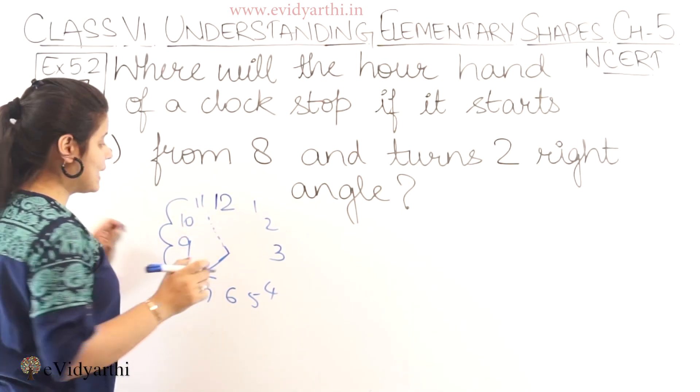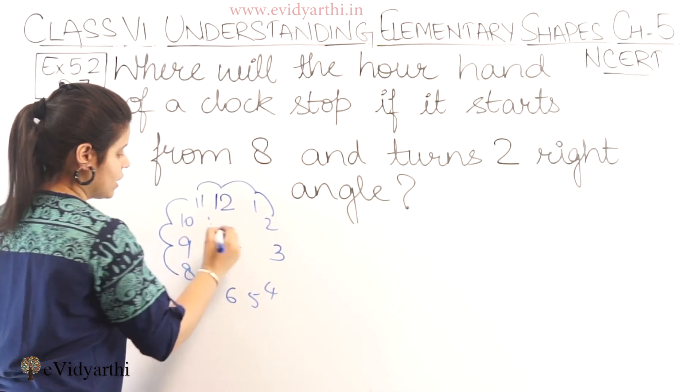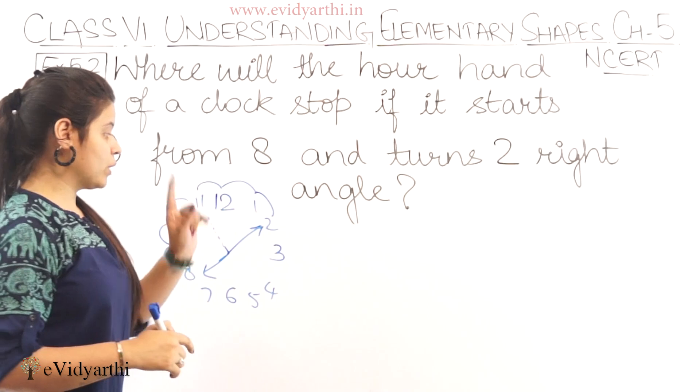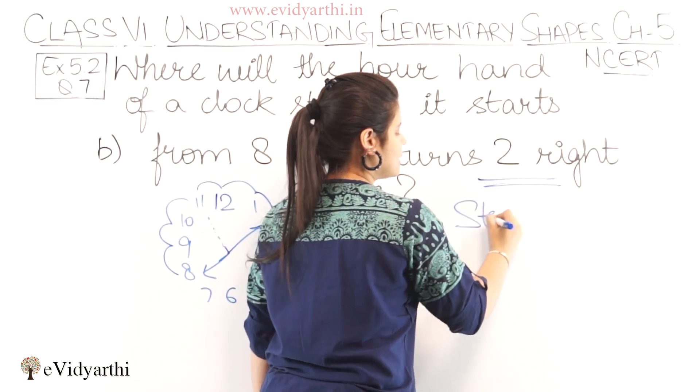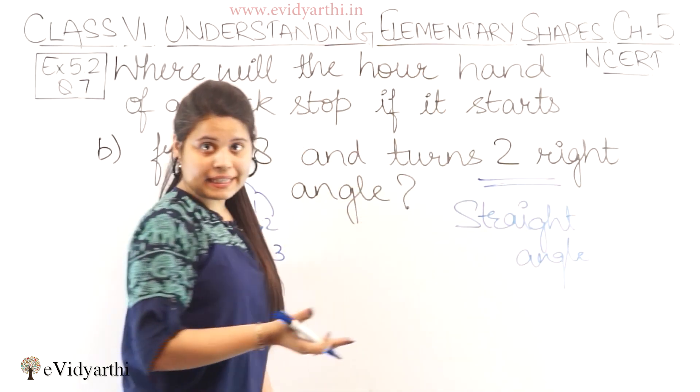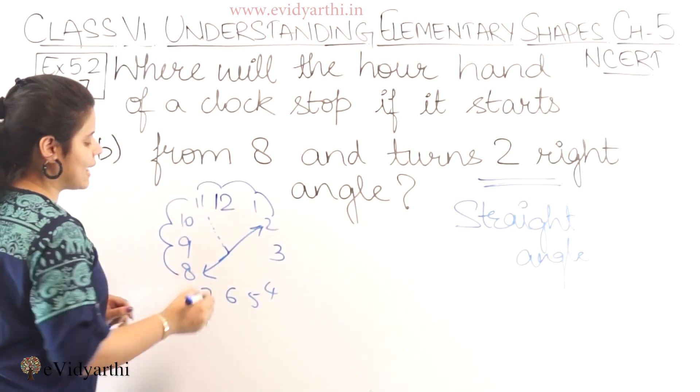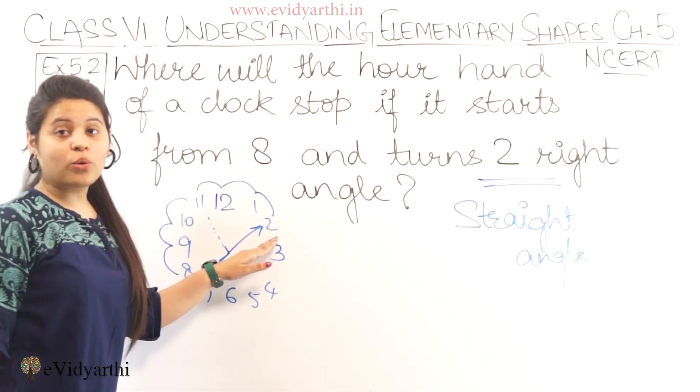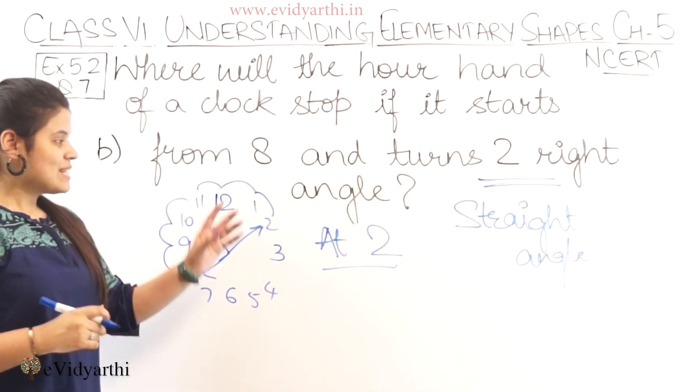So 11 is one right angle then 11 to 12, 12 to 1, 1 to 2. So means at 2, two right angles complete. Also we can see it in an easier way. That 2 right angles means a straight angle. Because right angle is 90 degrees. 2 ninety degree angles together make 180 degrees which is a straight angle. So from 8 if we make a straight angle, that will go at 2. So this means the answer will be at 2.